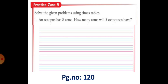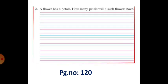And practice zone 5, page number 120. Solve the given problem using times tables. Second question also. So children, read the question and understand the question and do the multiplication table sums.